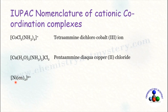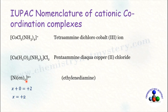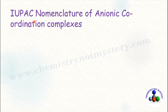Next example: nickel is the central metal ion and 'en' is the abbreviation for ethylenediamine, a bidentate neutral ligand. Let oxidation number of nickel = x. Ethylenediamine charge = 0, and the complex ion carries a +2 charge: x + 0 = +2, so oxidation number of nickel = +2. For naming: ethylenediamine is a bidentate ligand and there are 2 of them, so instead of 'di' we use 'bis.' The name is bis(ethylenediamine) nickel(II) ion.